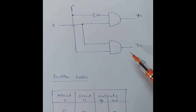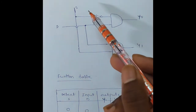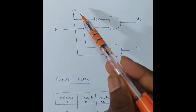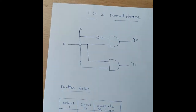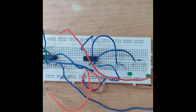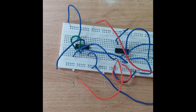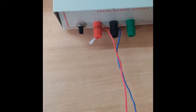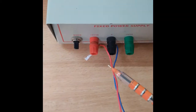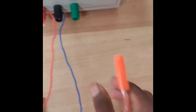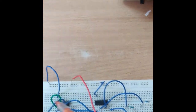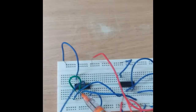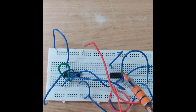That means Y1 is selected based on the selection line S. The whole circuit diagram is connected on the breadboard. This is the fixed power supply at 5 volts, and this is the ground wire. The connections are given to the breadboard. The first IC is the NOT gate and the second IC is the AND gate.